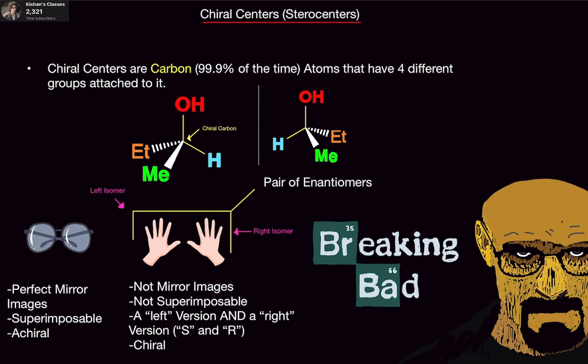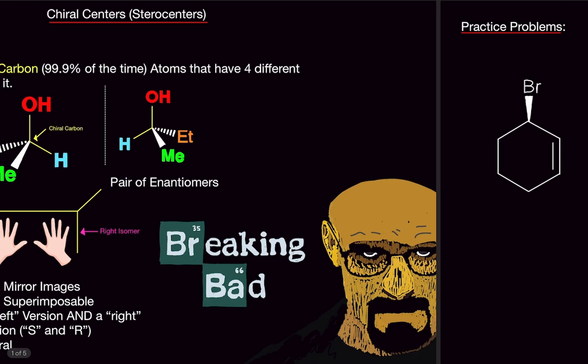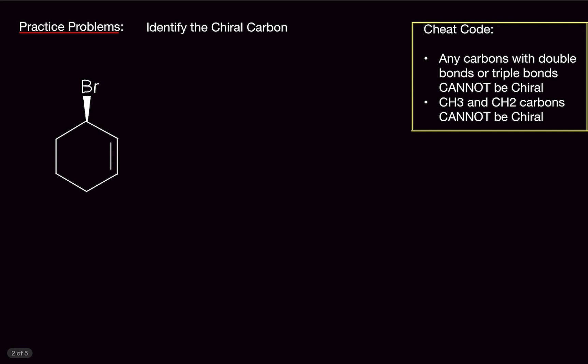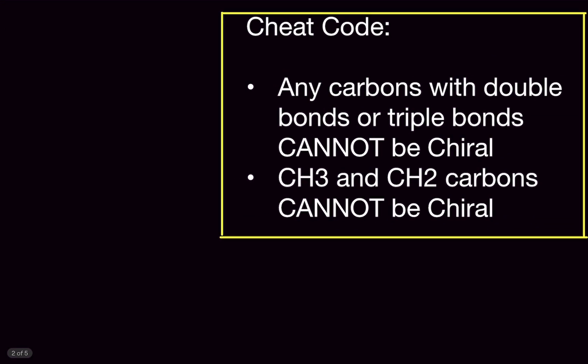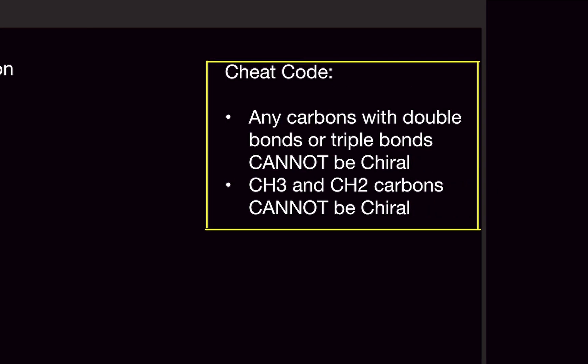Don't worry if this is a lot — future videos will cover it in depth. For now, let's focus on identifying chiral centers and chiral carbons in practice problems. Here's a cheat code: any carbons with double bonds or triple bonds cannot be chiral.